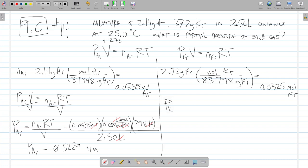Pressure of krypton equals moles of krypton times RT divided by volume. Moles of krypton are 0.0325. R is 0.082 liter atmosphere over mole K. And the temperature is the same, 298 K divided by 2.50 liters.